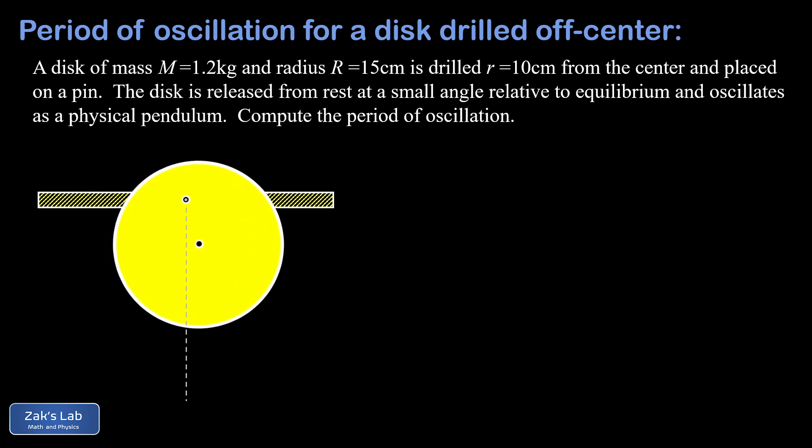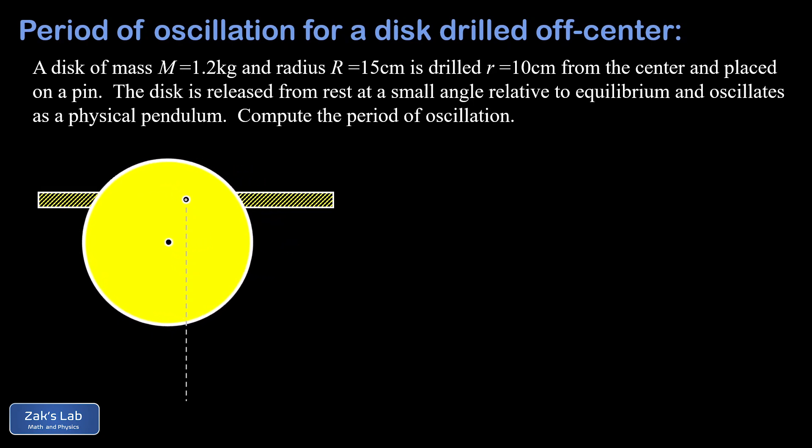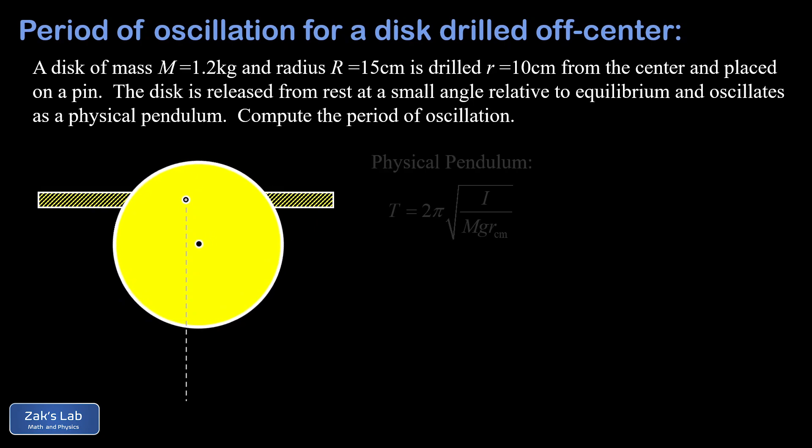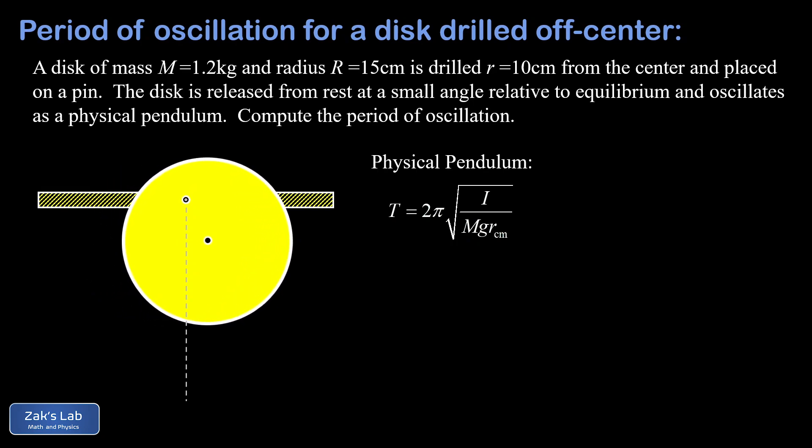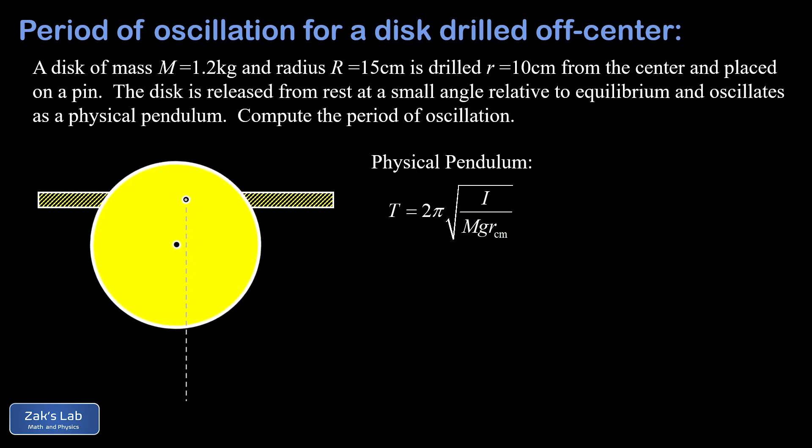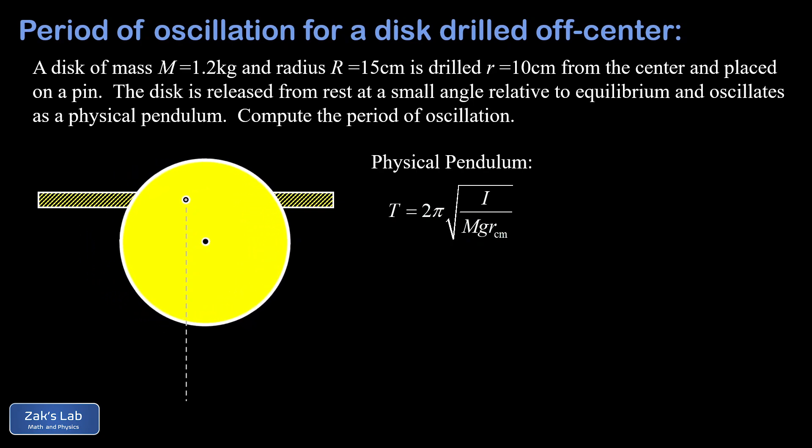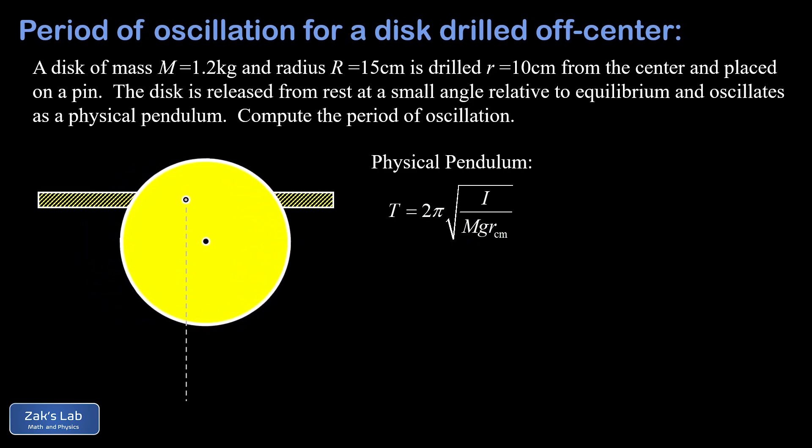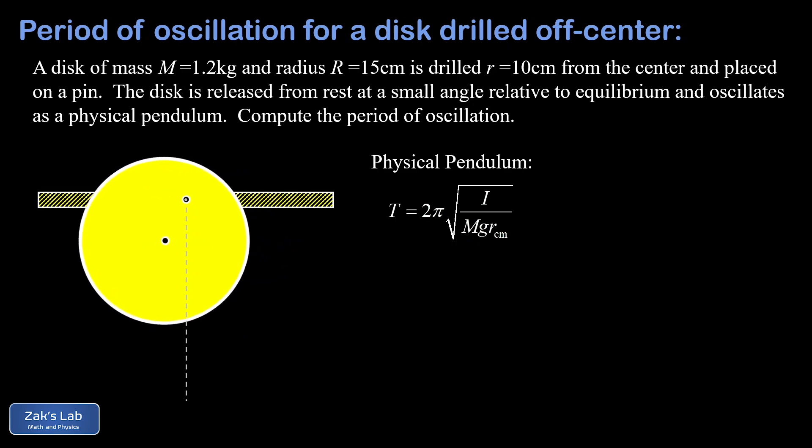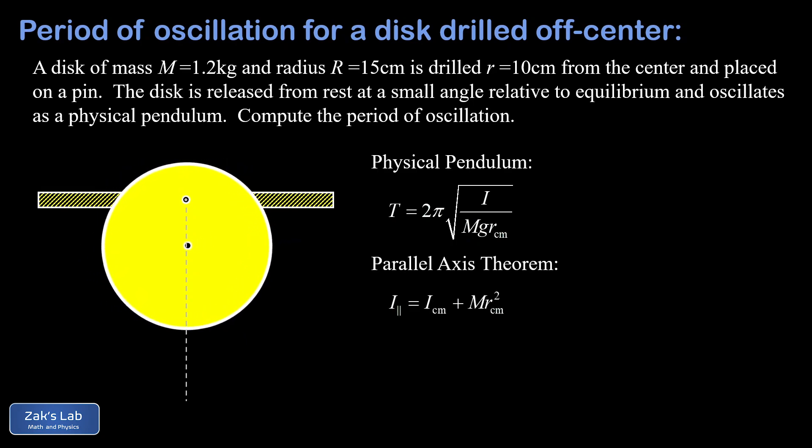To find the period of oscillation, we're going to have to bring in several prior results, and I'll post links to those videos as we bring these in. First, we need a reminder of our result for the period of a physical pendulum. That turns out to be 2π times the square root of the moment of inertia of the object, measured with respect to the actual rotation axis about that pin, divided by the mass times g, the acceleration of gravity, times the separation distance between the rotation axis and the center of mass of the object.